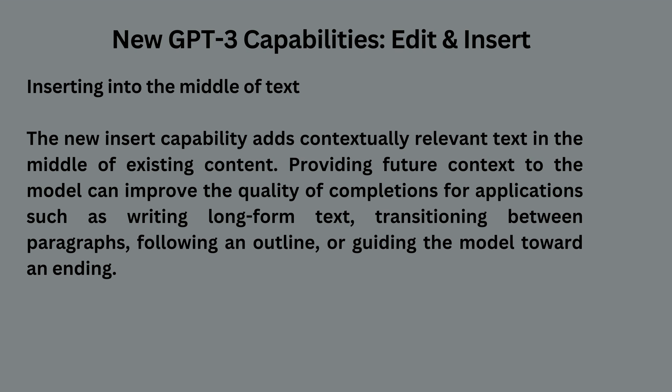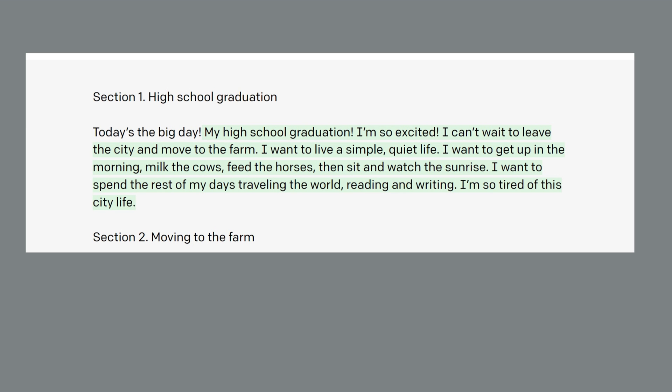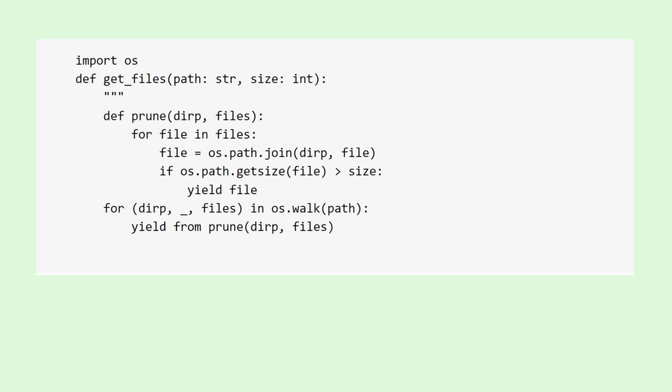Inserting into the middle of text: the new insert capability adds contextually relevant text in the middle of existing content. Providing future context to the model can improve the quality of completions for applications such as writing long-form text, transitioning between paragraphs following an outline, or guiding the model toward an ending. In the example above, the desire is to fill in text between two section headers of an outline. Without the context of future sections, the model generates a completion that isn't relevant to the second section. When the context of future sections is accounted for, the model generates a completion that ties the two sections together.